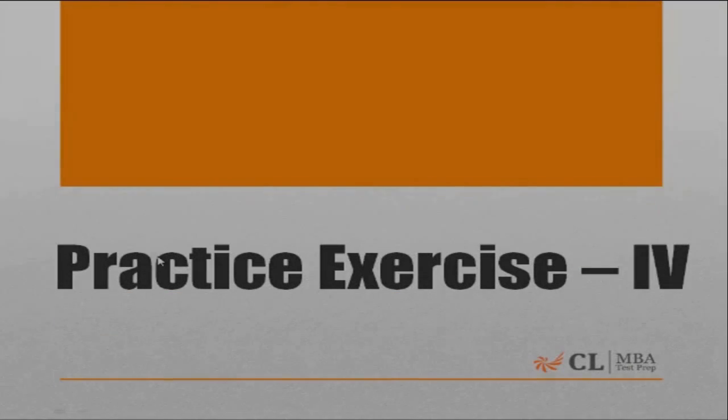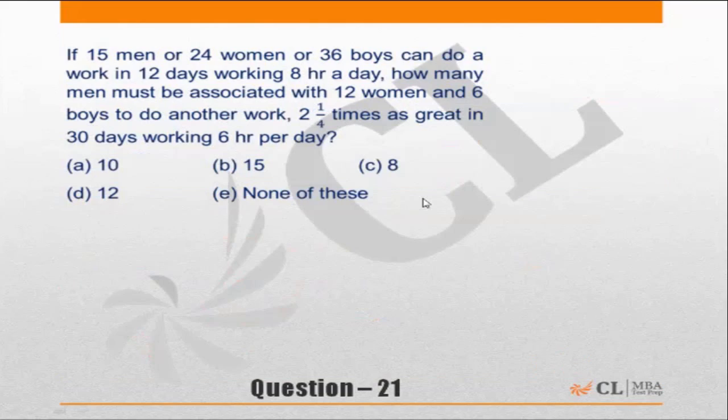Practice exercise 4 of time, speed, distance funda book. Let's go through the questions. Question 21: 15 men or 24 women or 36 boys can do a work in 12 days working 8 hours a day. How many men must be associated with 12 women and 6 boys to do another work 2.25 times as great in 30 days working 6 hours per day?